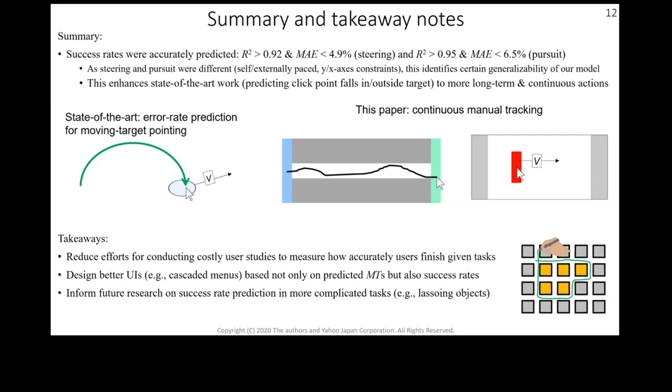And the cursor motion was constrained on the y-axis in the path steering, while the cursor was constrained on the x-axis in the pursuit task. This identifies a certain generalizability of our servo-Gaussian model.